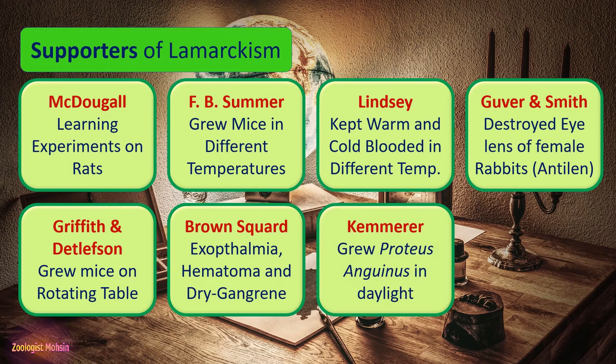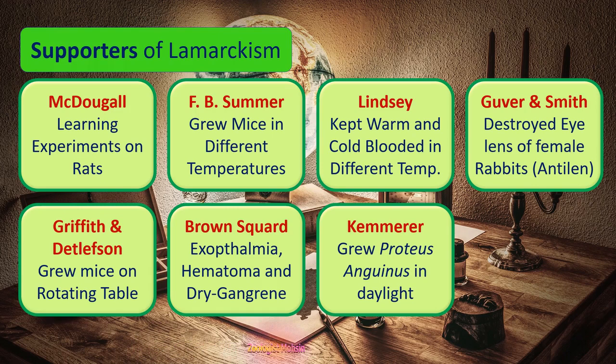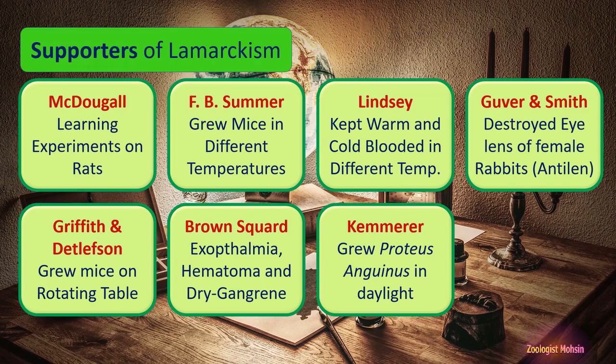Similarly, Cameron grew Proteus Anguinus — a long-tailed amphibian that lives in deep, dark seabeds and is a blind, almost colorless species. Cameron brought them from the dark seabed into daylight and started growing them. When grown in daylight, their body color changed to brown and black and they also developed their eyes normally, no longer being blind. These experiments led Cameron to conclude that when environmental conditions change, organisms quickly adapt, and that adaptation is inherited by the next generation, supporting Lamarckism.